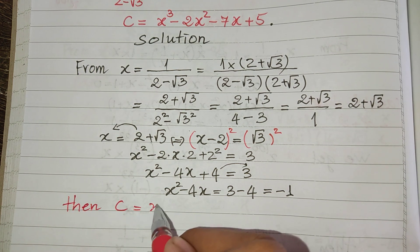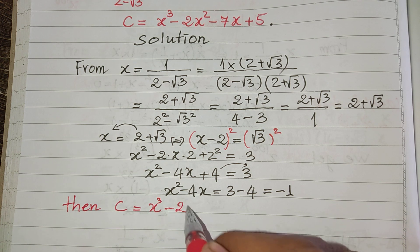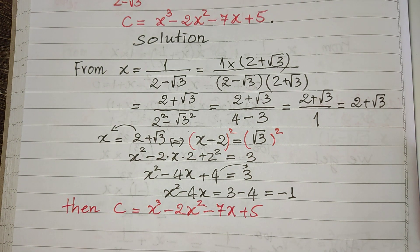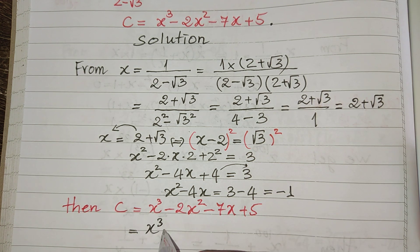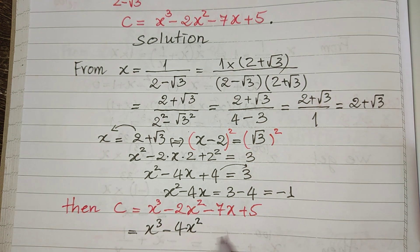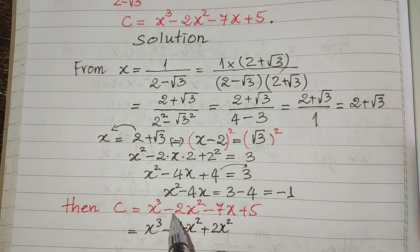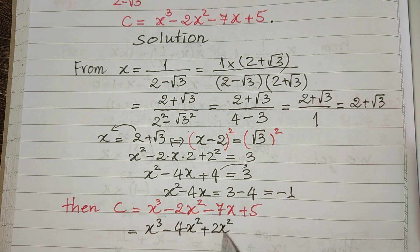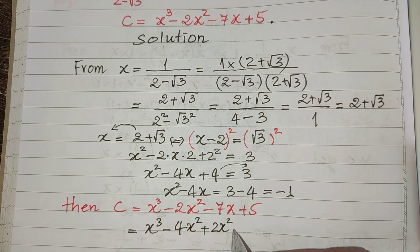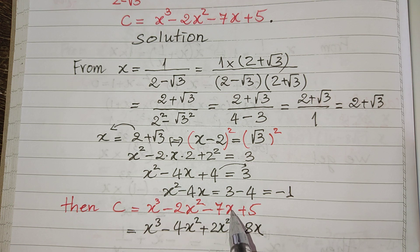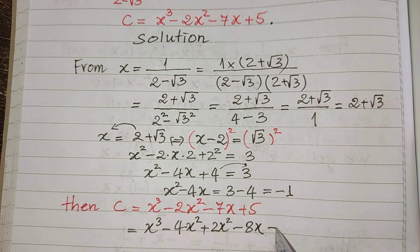We have C equals h power 3 minus 2 x squared minus 7h plus y. This can be rewritten as h power 3 minus 4 x squared plus 2 x squared — because minus 4 plus 2 equals minus 2 — minus 7h, and we split minus 7h as minus 8h plus h, so we get plus h plus y. We take h out as a factor to get h times x squared minus 4h, and plus 2, and we take 2 out, so we get x squared minus 4h plus 1.